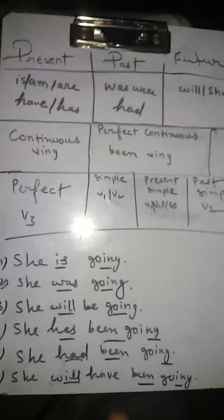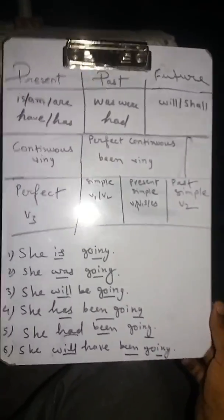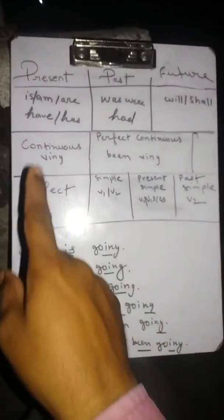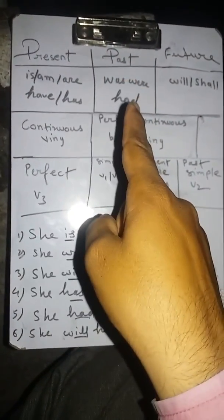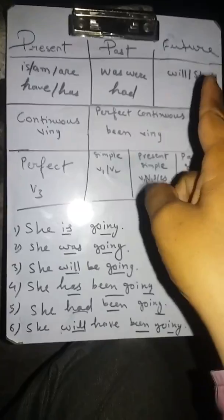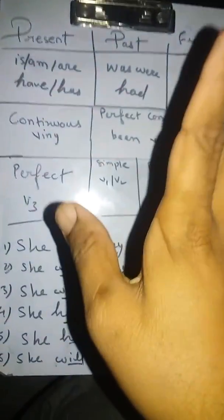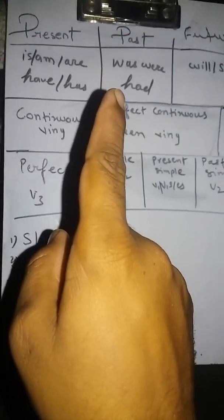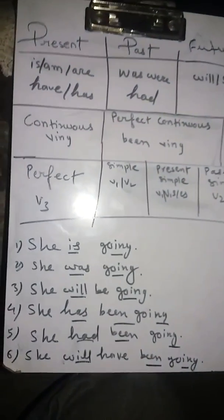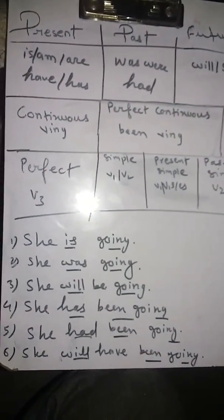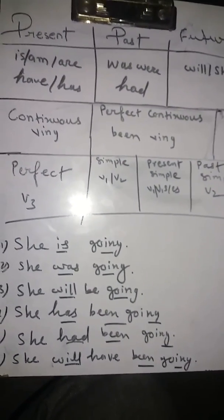Now you can see there on the board. I made three columns in the table. First: present. Second: past. Third: future. Whenever you locate is, am, are or have, has as helping verb, it will be only present tense. It cannot be past or future.